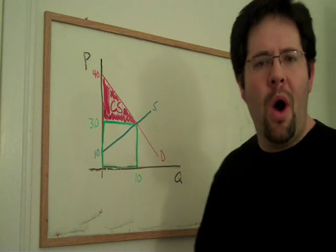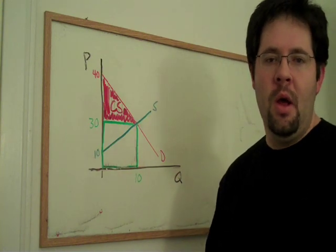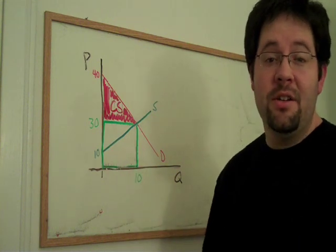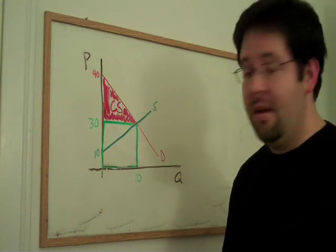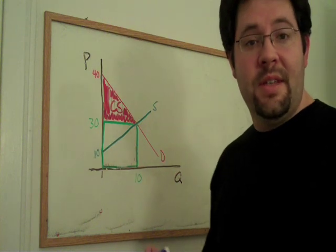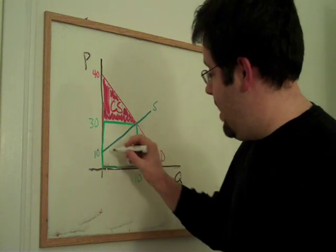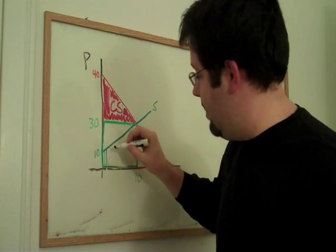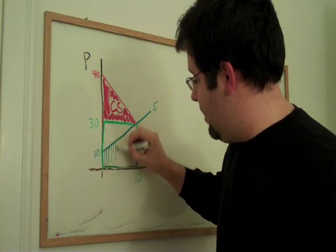So what about the producers? Why would they ever come to the market? Well, if you remember from the previous video, our supply curve just represents the marginal cost of producing a unit. And so we can do a similar exercise, asking how much did this unit cost, how much did this one cost? And we can go ahead and trace out the cost.